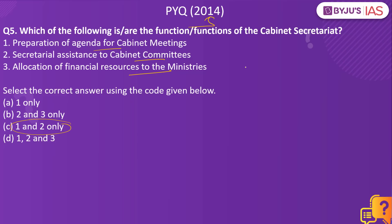There are different ministries and departments present in the Union Government, and they have to coordinate between each other. The Cabinet Secretariat takes up this responsibility. There would be differences between ministries and departments, with each trying to assert themselves. The Cabinet Secretariat sorts out these differences, provides secretarial assistance to cabinet members and its committees, and helps the government in major decision-making by providing important inputs. It irons out differences between inter-departments and inter-ministries.